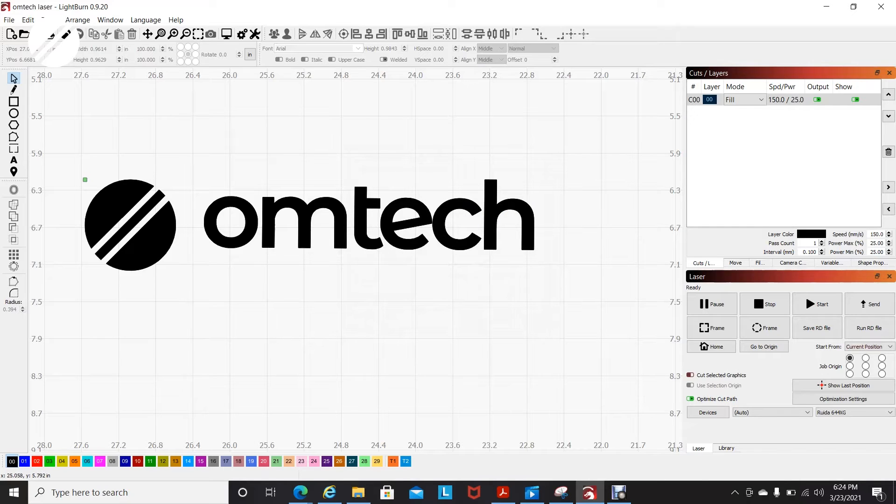You will then download or upload your specific design that you want to engrave. Here we have our OMTECH logo. I have it in the engraving black layer. These are the settings I will be using: 150 speed at 25% power. Again, we are using an 80 watt machine.